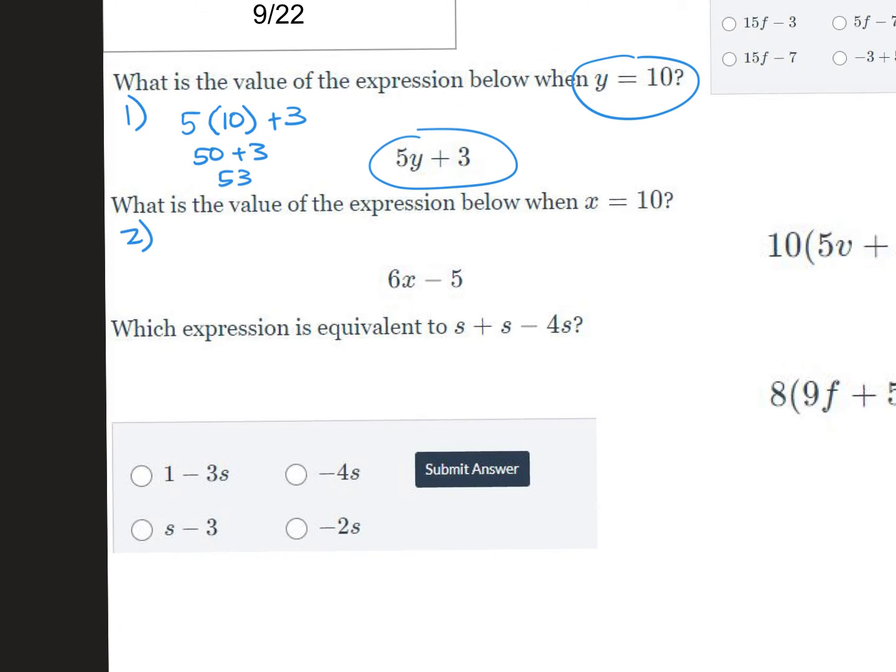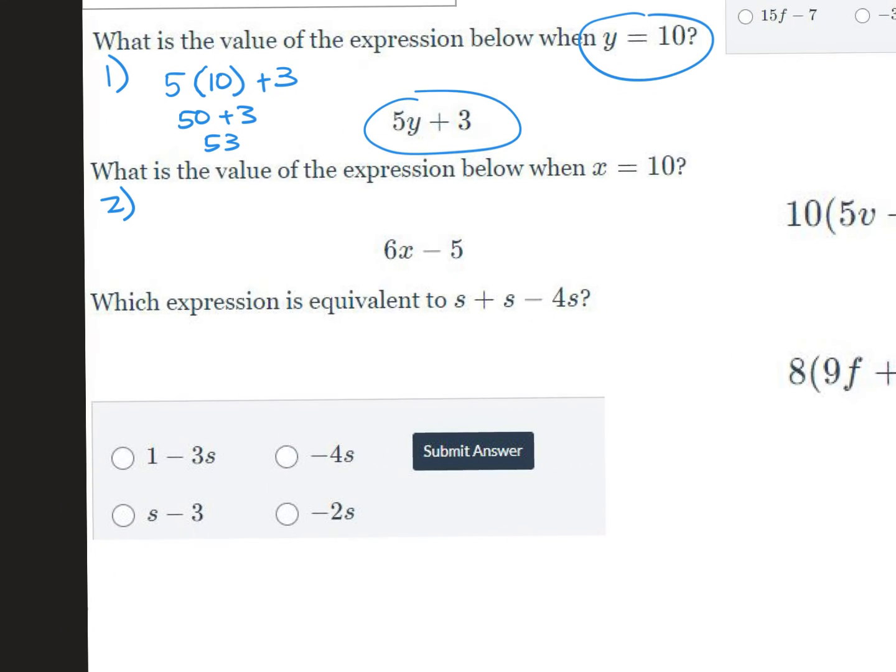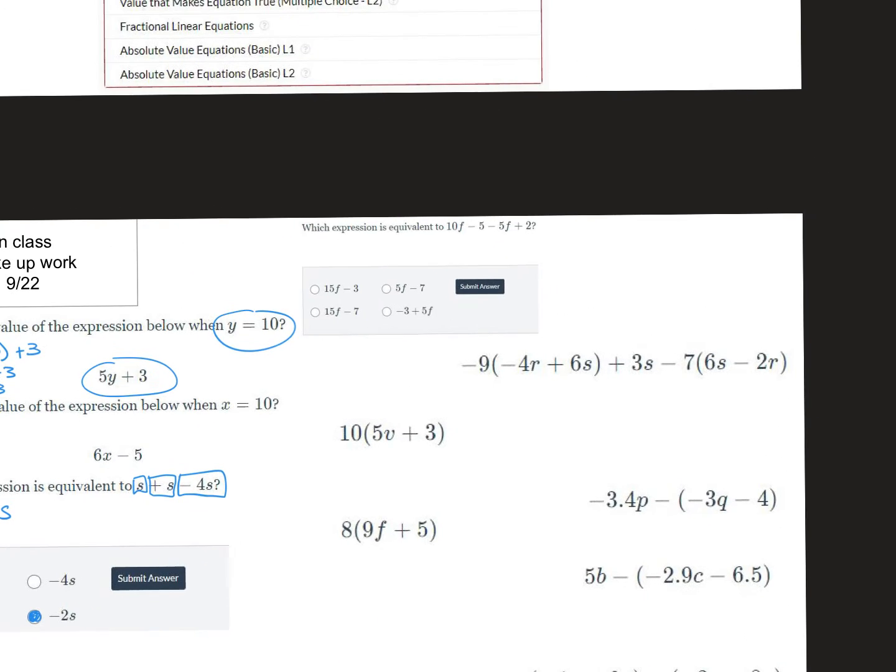Number three was, which of these, these are the answers down here, is equivalent to s plus s minus 4s? I think we know that those are like terms. So we have 1s, and now we have plus another s is 2s, minus 4s is negative 2s, and that would have been that one. So you can basically just write down s plus s minus 4s.